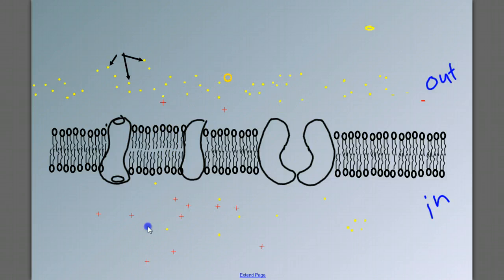Well, it's very obvious to see that we have a lot more of these red positive charges inside. So they would like to move down their concentration gradient, which in this case would be out.